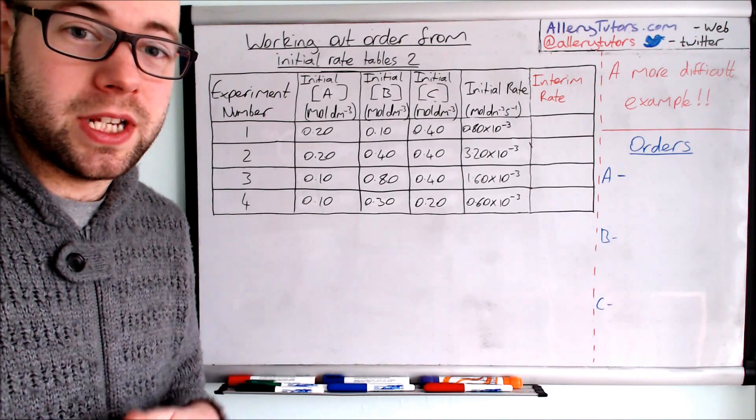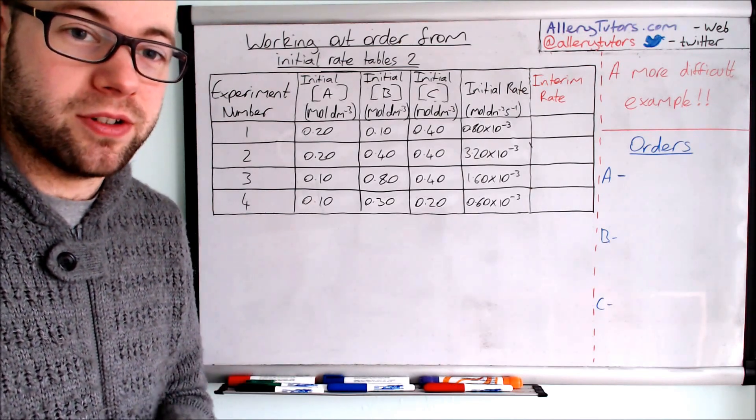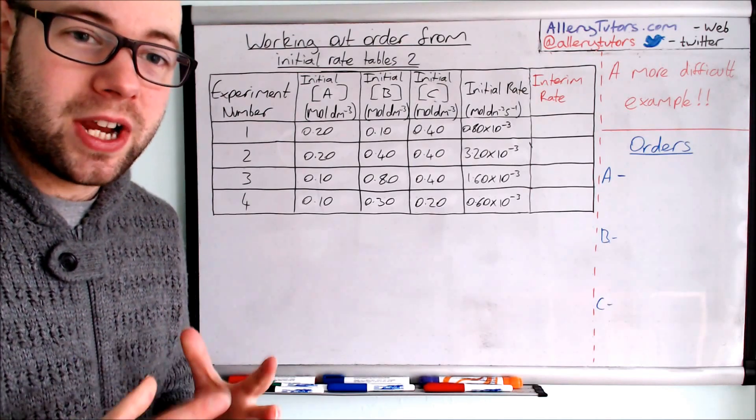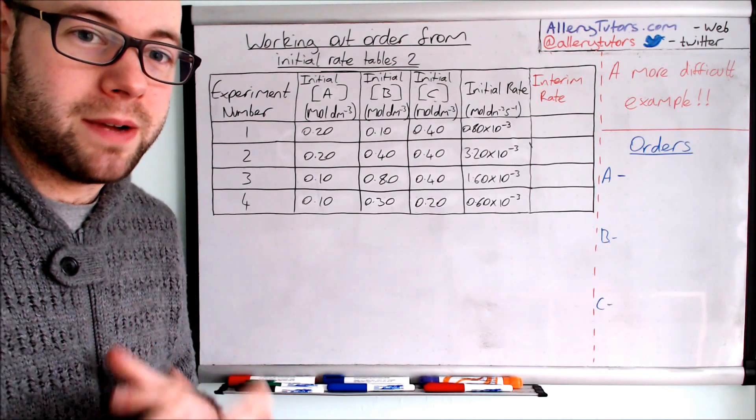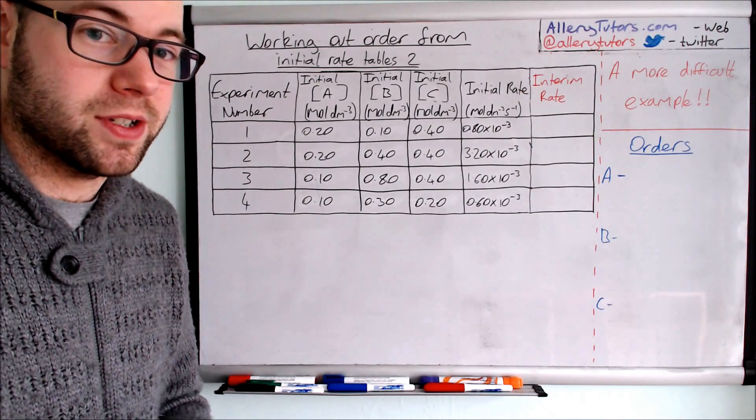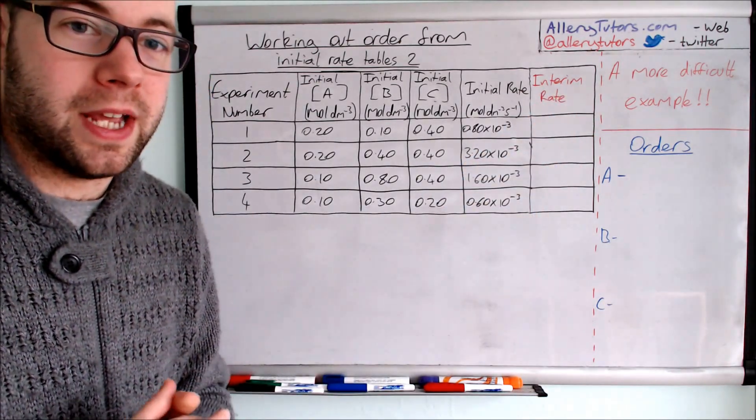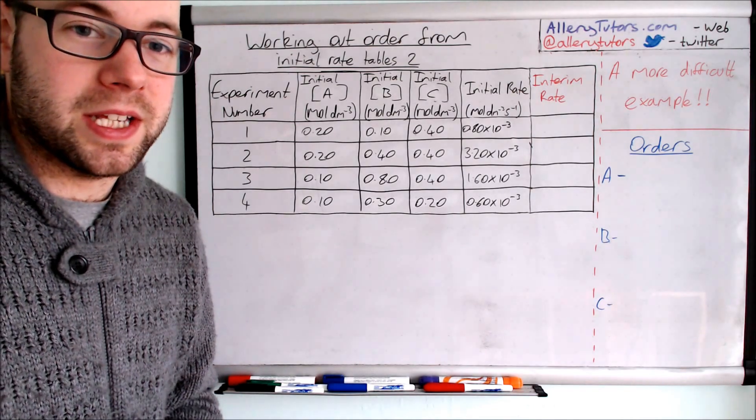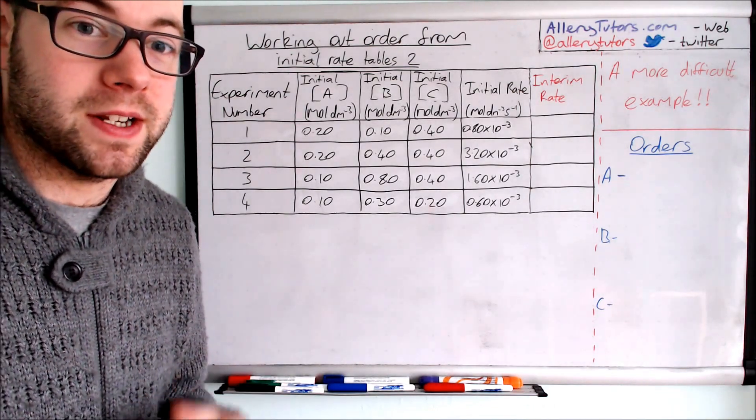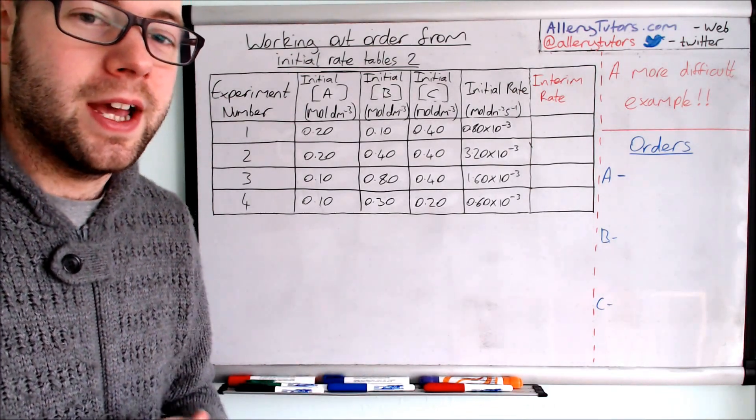We're going to use the data table here which shows us initial rates. This time I've changed it a little bit because the way in which we work this out has to be different. I've added an extra column on the end to help work these things out properly and I've called that interim rate. I'll explain where this comes in in a minute.